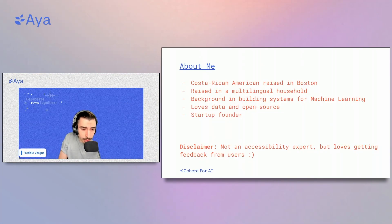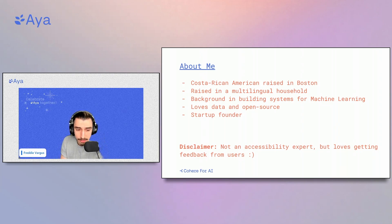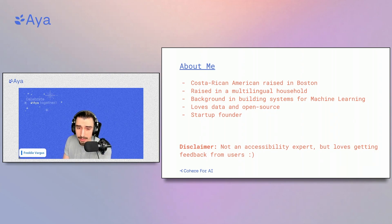A little bit about me: I'm a Costa Rican American, born and raised in Boston. I was raised in a multilingual household. I have a background in building machine learning systems, and I love data and open source. As a quick disclaimer, I'm not actually an accessibility expert, but I do love getting feedback from users. I want to tell you a little more about why I decided to work on Aya.